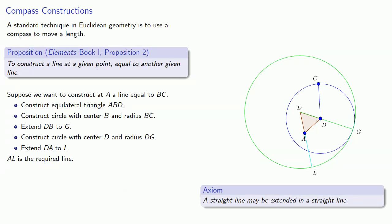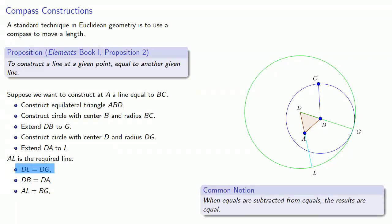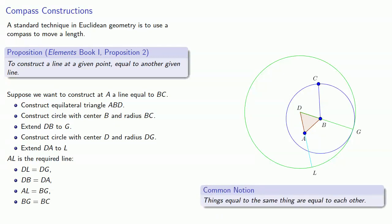And the proof goes as follows. DL is equal to DG because they're both radii of the same circle. DB is equal to DA because they are two sides of an equilateral triangle. And AL is equal to BG. And this comes from our common notion. DL is equal to DG and DB is equal to DA. So when we remove equals from equals, the results are equal. Once again, BG is equal to BC because they're radii of the same circle. And things equal to the same thing are equal to each other and so AL has the length BC.